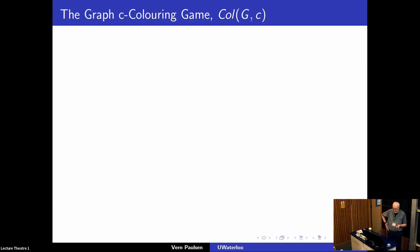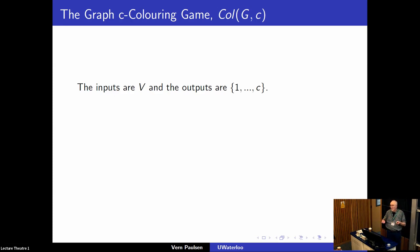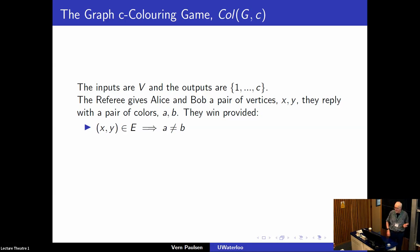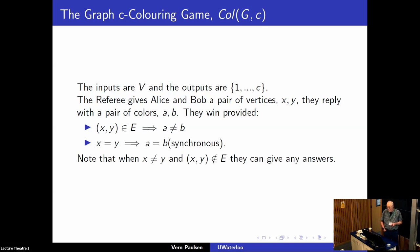Here's the c-coloring game: the inputs are vertices, so Alice and Bob receive a pair of vertices; the outputs are colors. They win if any time the pair of vertices they received was an edge, the colors they replied with are different — they've correctly colored that edge. There's also the synchronous rule: any time they're given the same vertex, they must reply with the same color. This rule is crucial — without it, Alice could always reply red and Bob always reply green, and it would seem like they were two-coloring any graph.